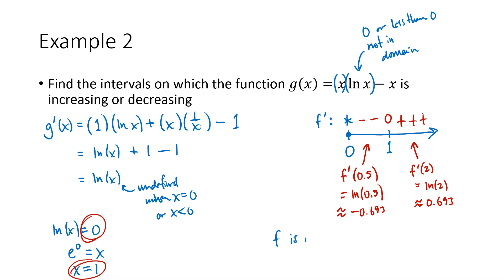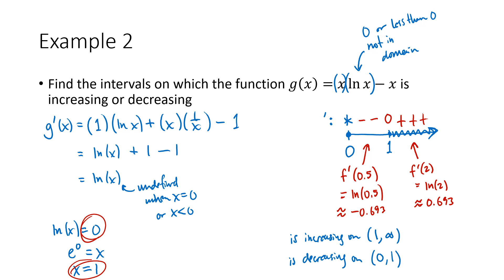My conclusion is that g is increasing on the interval from 1 to infinity — that's where I got the pluses on the number line. And g is decreasing on the interval from 0 to 1. I don't have to worry about any numbers equal to 0 or less than 0, because none of those are in the domain of my function — I can't plug any of those numbers into g at all. So because g is not defined for negative x values, we don't have to worry about those being places where the function is increasing or decreasing.